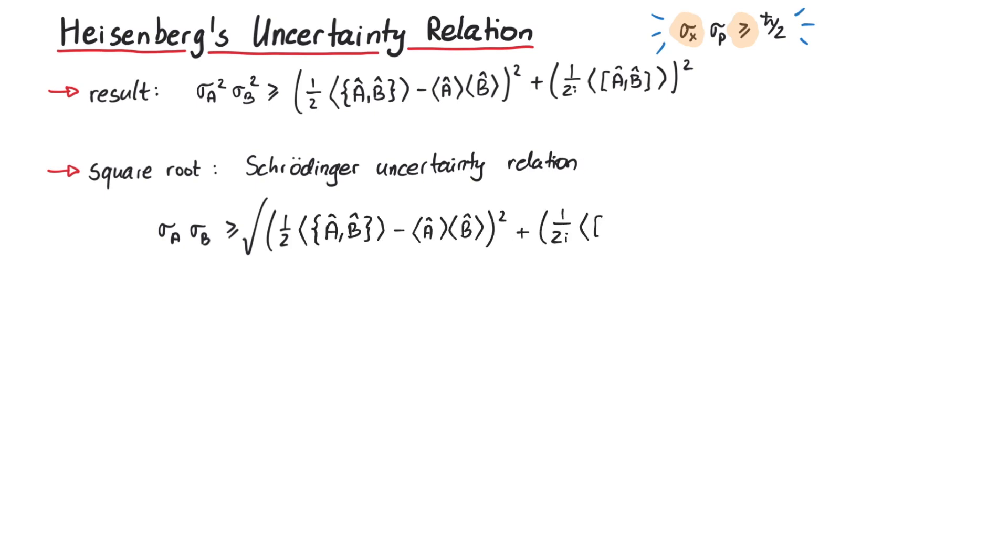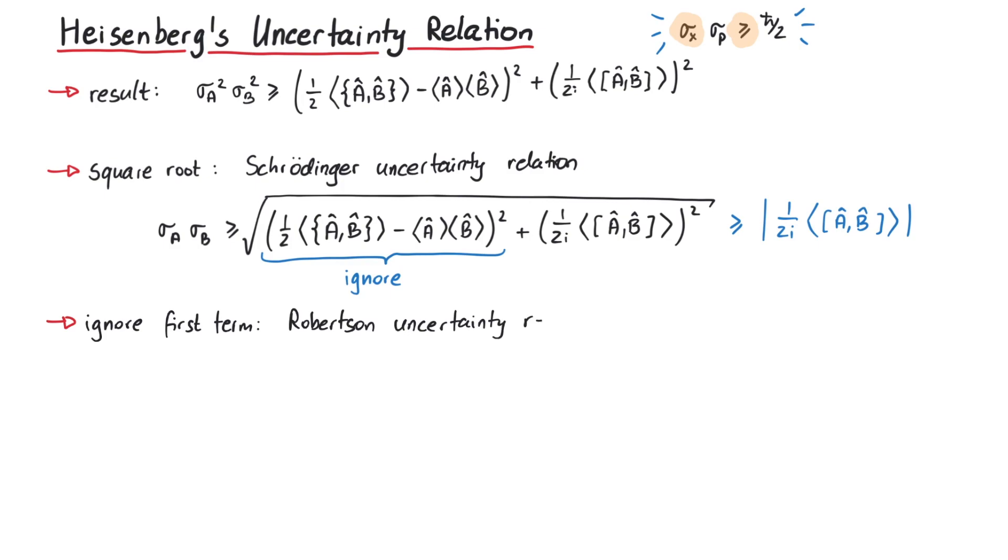Now this long square root term is obviously larger than if we simply ignore the first term. If we now consider only the left and rightmost terms of this inequality chain, we get a weaker condition called the Robertson uncertainty relation.